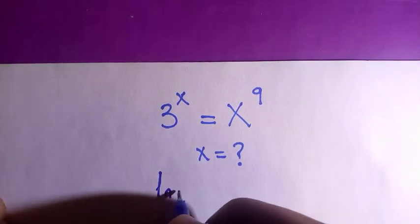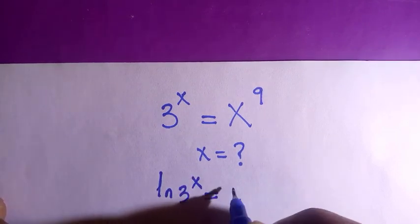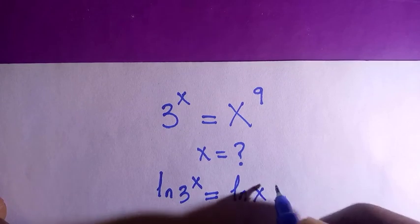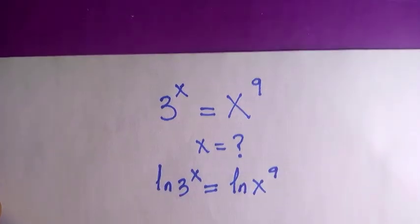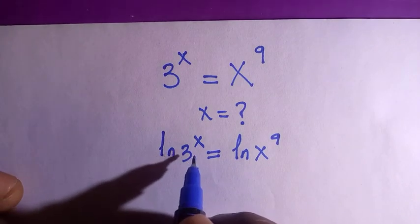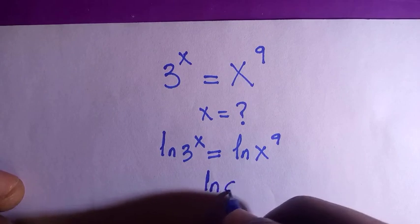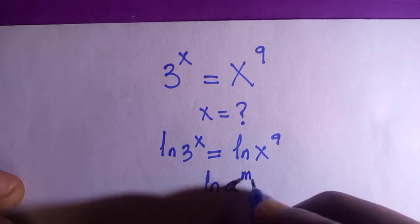We have ln(3^x) equals ln(x^9). Then, according to the rules of logarithm that say given ln(a^m), this equals m*ln(a).